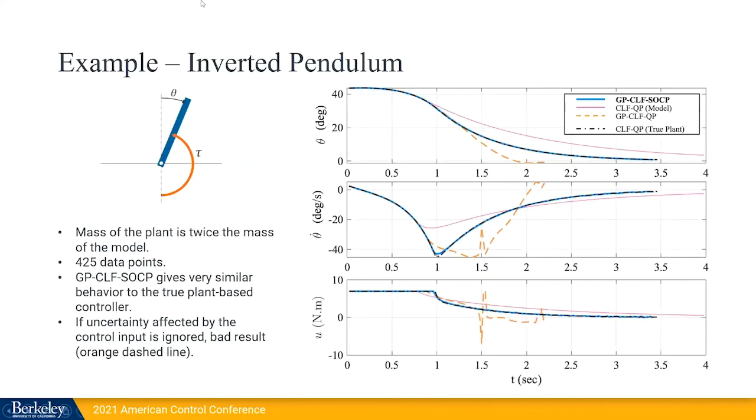Now for the results, we first have an example that is an inverted pendulum in which the mass of the plant is twice the mass of the model. And what we can see in blue is that our GPCLF-SOCP gives a very similar result to the true plant-based controller, that is in a dashed black line. Whereas the nominal model-based controller in pink and the controller obtained if we assume that there are no input effects in the uncertainty, that is in the orange dashed line, get very bad results.